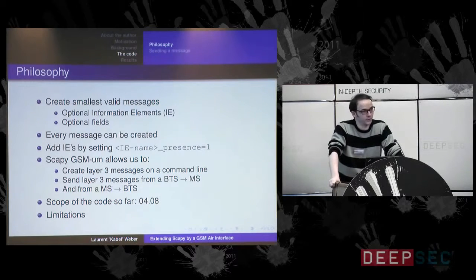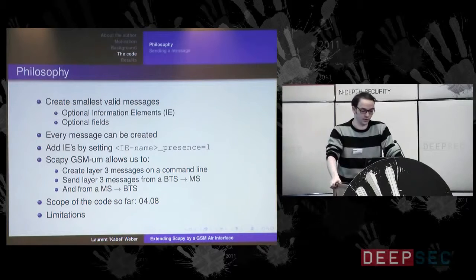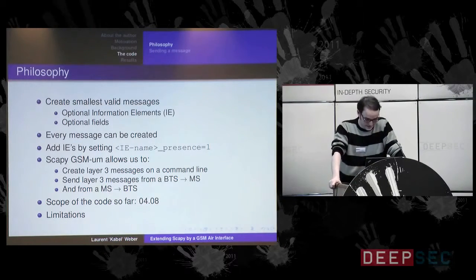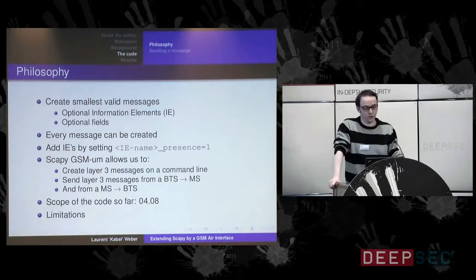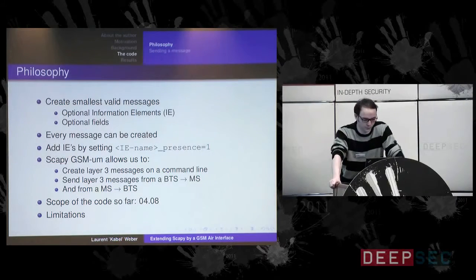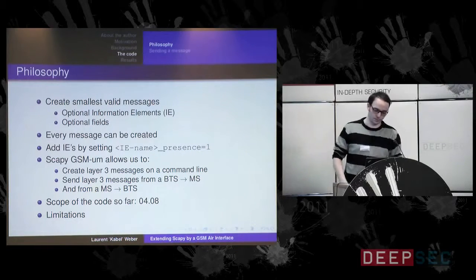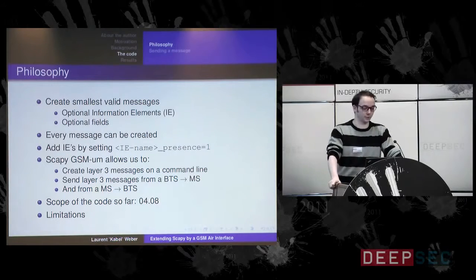This is not a limitation because it's still possible to create every possible message. You can simply add the information element name with underscore presence set to one as a function parameter if you want that information element. Since I implemented the whole protocol, you are able to create layer 3 messages on the command line and these messages can be sent from a base transceiver station to a mobile station. You could also send messages from your mobile phone to some BTS and do some fuzzing on an operator's network, but I'm not going to do this — first because I don't want to accidentally crash the network operator's infrastructure, and for the moment there is no open source possibility to do this.